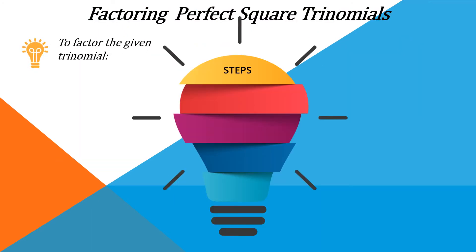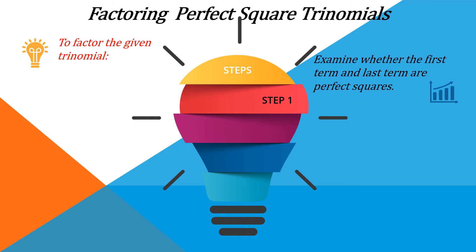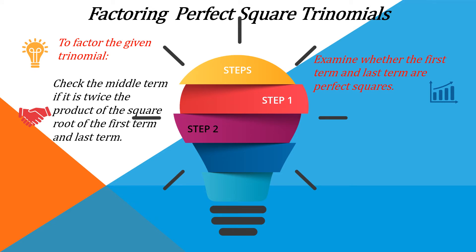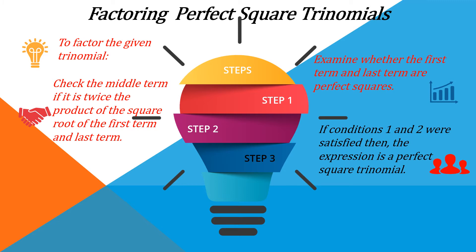Now let us go to factoring the given trinomials. The procedures are: first, examine whether the first term and the last term are perfect squares. Next, check the middle term if it is twice the product of the square root of the first term and the last term.